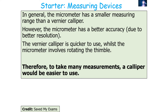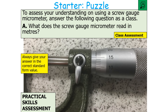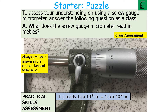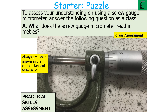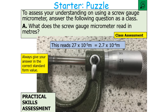If we were using a screw gauge micrometer to measure the diameter of a wire, you might see a reading like this: the thimble scale lined up with the main scale at 15, giving 0.15 millimetres, or 15 times 10 to the minus 5 metres, which is 1.5 times 10 to the minus 4 metres. Another example: a reading of 27 on the thimble scale gives 27 times 10 to the minus 5 metres, or 2.7 times 10 to the minus 4 metres in standard form.